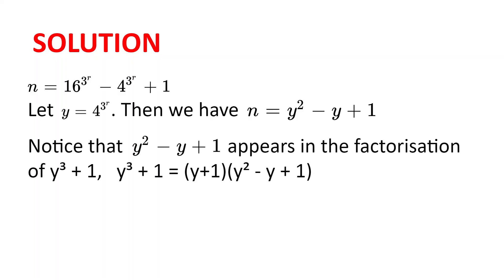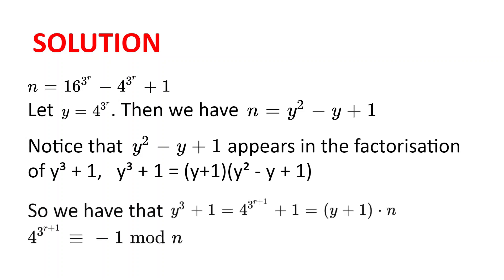Notice that y squared minus y plus 1 appears in the factorization of y cubed plus 1. y cubed plus 1 is equal to y plus 1, multiplied by y squared minus y plus 1. So we have that y cubed plus 1, which is equal to 4 to the power of 3 to the power of r plus 1, plus 1, is equal to y plus 1 times n.